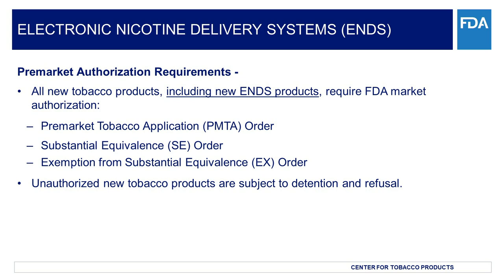Per court order, marketing applications for deemed new tobacco products, including ENDS, were due to FDA by September 9, 2020. Products on the market as of February 15, 2007 are considered pre-existing, formerly known as grandfathered tobacco products. A pre-existing tobacco product is not a new tobacco product and does not require an application. To date, no valid grandfathered ENDS product has been identified, and all pre-market applications for ENDS products received by the FDA have been through the PMTA pathway. As a reminder, unauthorized new tobacco products, including ENDS products, offered for import into the U.S. are subject to detention and refusal.